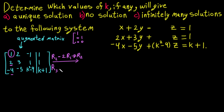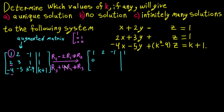And also R3 plus 4 times R1 into R3. For the new R2: 2 minus 2 times 1 is 0; 3 minus 2 times 2 is negative 1; then 1 minus with minus is plus, giving 1 plus 2 which is 3; and 1 minus 2 times 1 is negative 1.